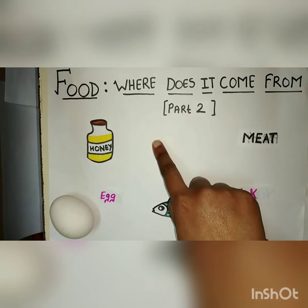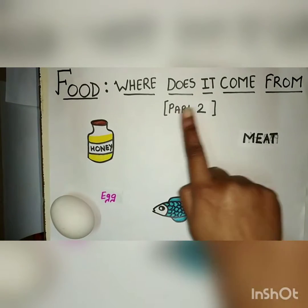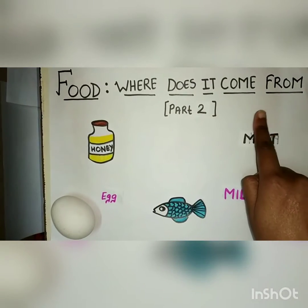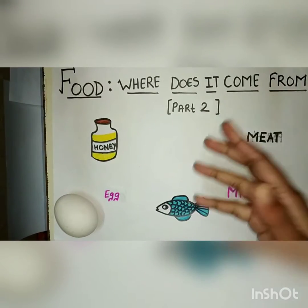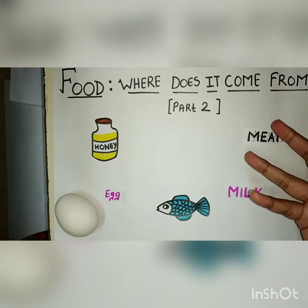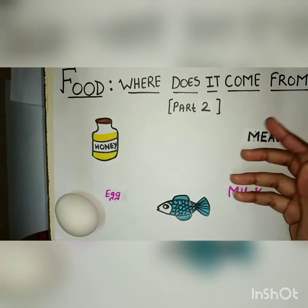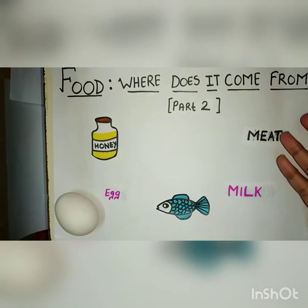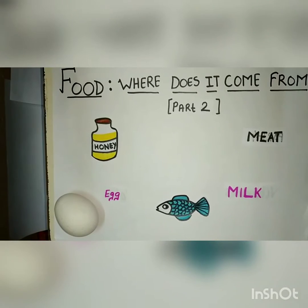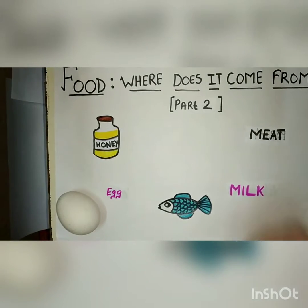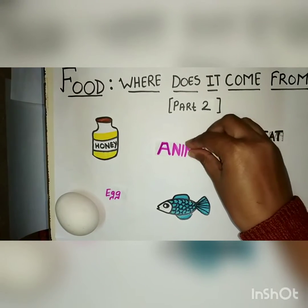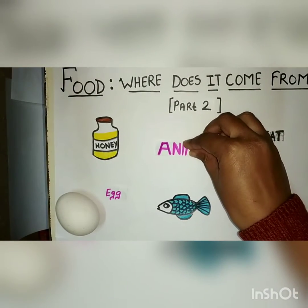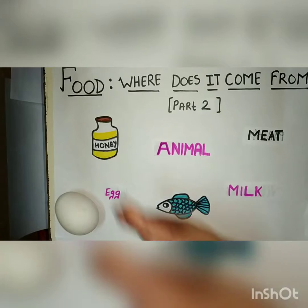In the previous video we have learned about what is food, what are the importance of food and what are the sources of food. Let us continue with the different sources of food which we get from animals.